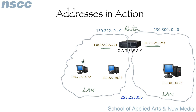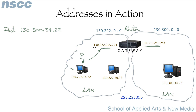Now we're going to consider this machine, which wants to send a packet to an IP address. The machine has to decide: do I send that packet locally on this LAN, or do I send it to an external LAN via the gateway? Every network device needs three pieces of information: its own IP address, the network mask, and the gateway address.